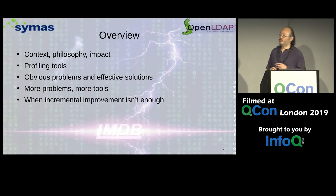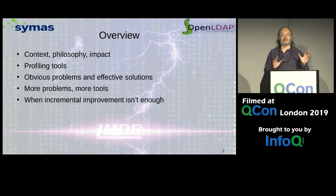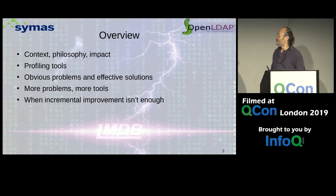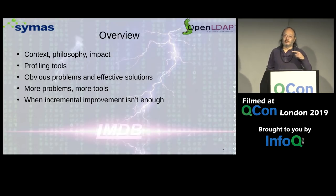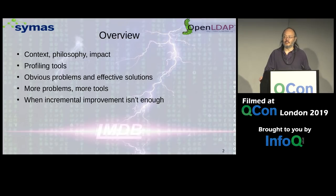One of the things you find as you improve a code base is once you fix one problem, several more become apparent. So you see more problems, you need more tools, and while you're refining and improving, sometimes you'll also find that incremental changes aren't good enough to get you where you want to be. Sometimes you need more drastic measures.